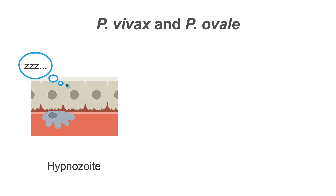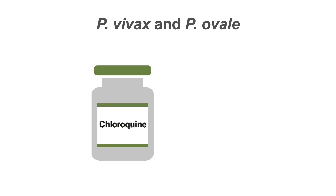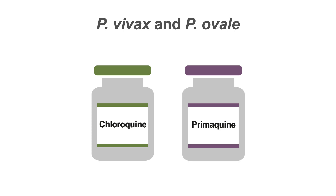This means the patient could have a relapse of vivax and ovale malaria if you don't also target the dormant hypnozoites in the liver. So you treat uncomplicated Plasmodium vivax and Plasmodium ovale malaria with chloroquine to target the active malaria, and then come back after treatment with primaquine, which penetrates into the liver cell and kills the hypnozoites. You use chloroquine plus primaquine to prevent relapse of these two types of malaria.